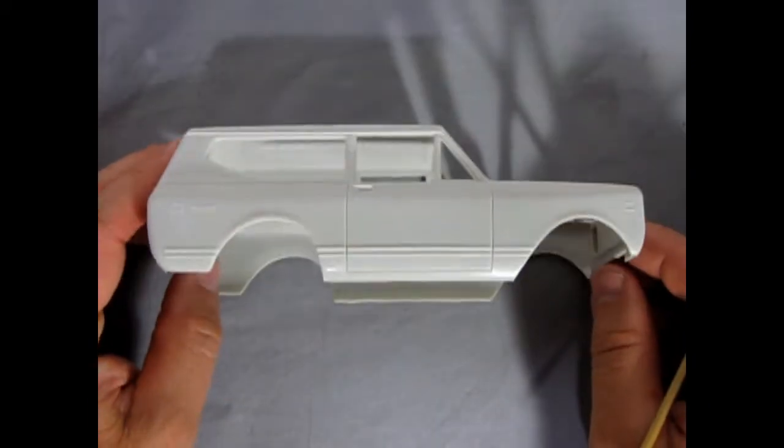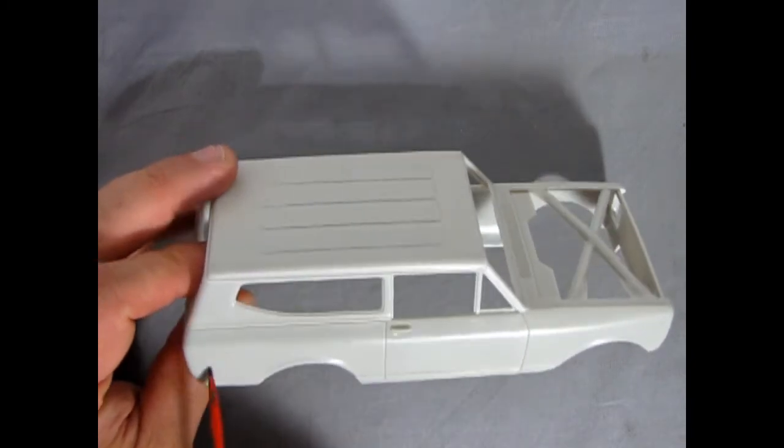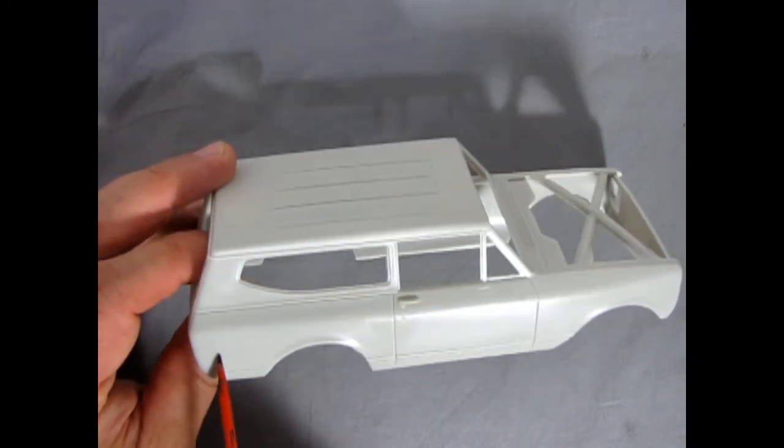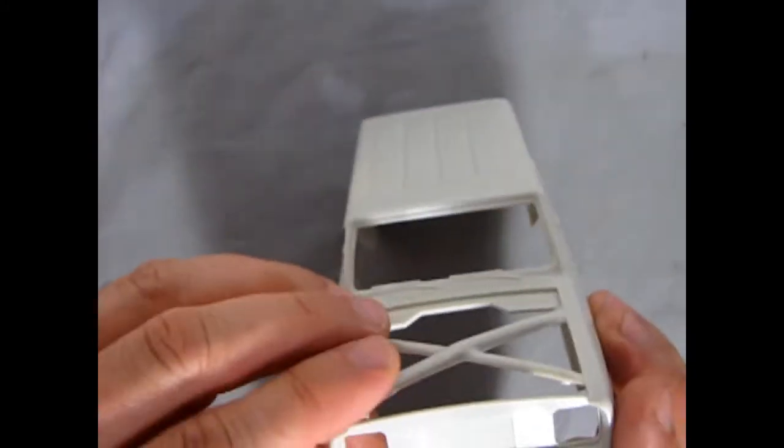Side profile looks correct for an International Scout. You do get the nice lower rocker panel trim as well as some of the emblems and then the door handles and side marker lights.